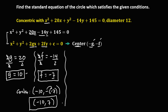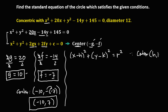To find the standard equation of this circle, we use the formula: x minus h, quantity squared, plus y minus k, quantity squared, equals r squared, where h and k is the center. So from this center, h is negative 10 and k is positive 7.